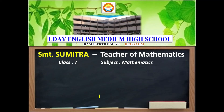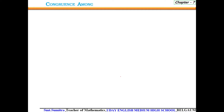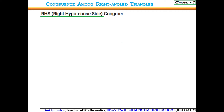Good morning students. Welcome to Part 6 of Chapter 7: Congruence of Triangles. Please be ready with the previous class notes. Today we study congruence among right-angled triangles — the RHS congruence criteria.